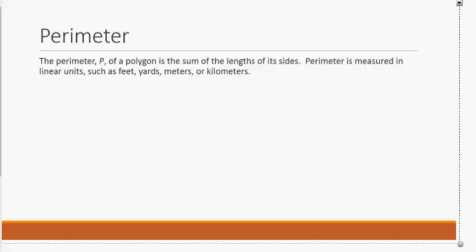First, we want to talk about how to find the perimeter. The perimeter, P, of a polygon is the sum of the lengths of its sides. Perimeter is measured in linear units, such as feet, yards, meters, or kilometers.